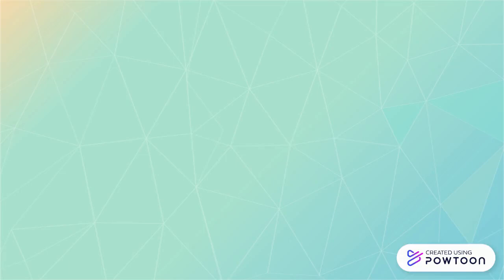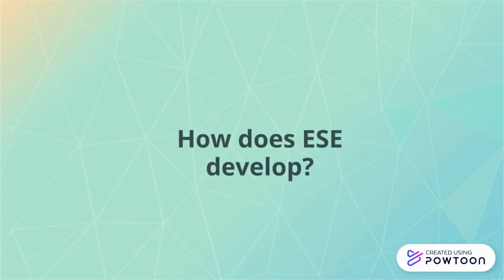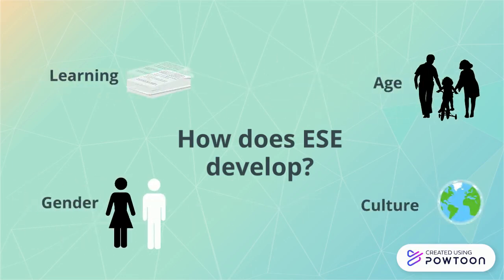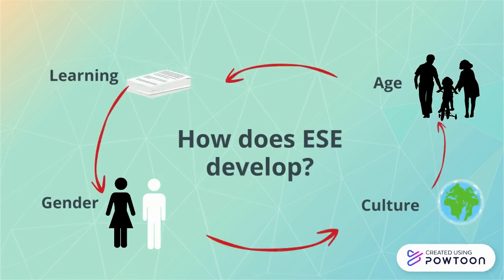So how did John's ESE develop? Literature highlights many factors that play a role in ESE development. These include age, gender, learning, and culture. Although literature has deemed some more important than others, they are hard to separate and often go hand in hand.